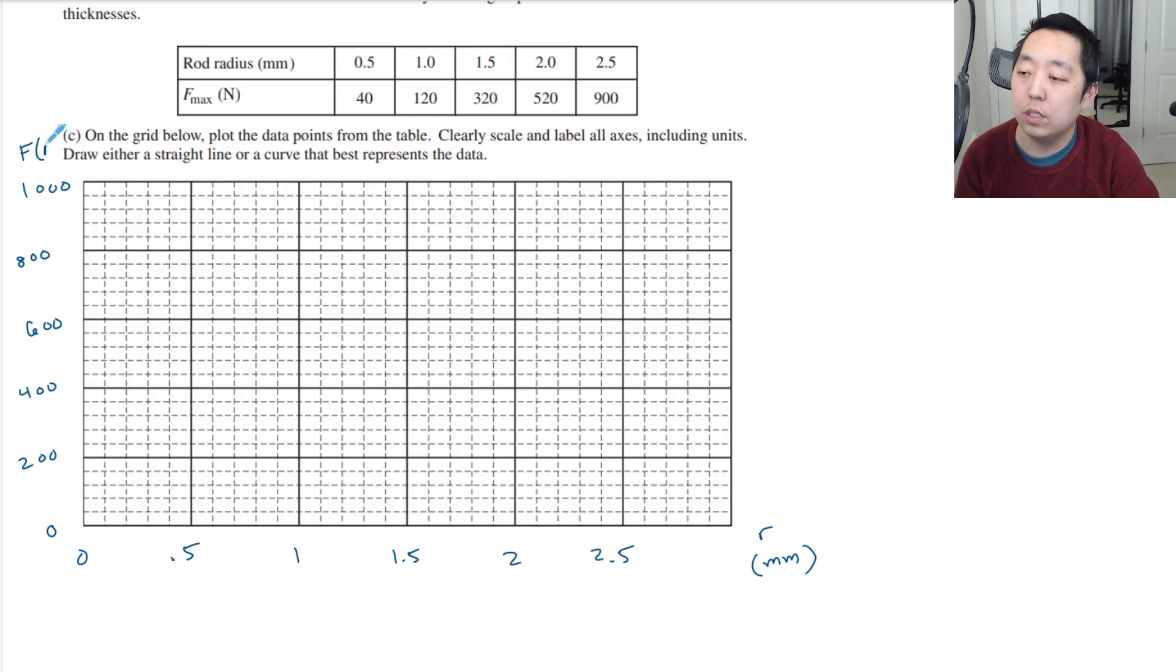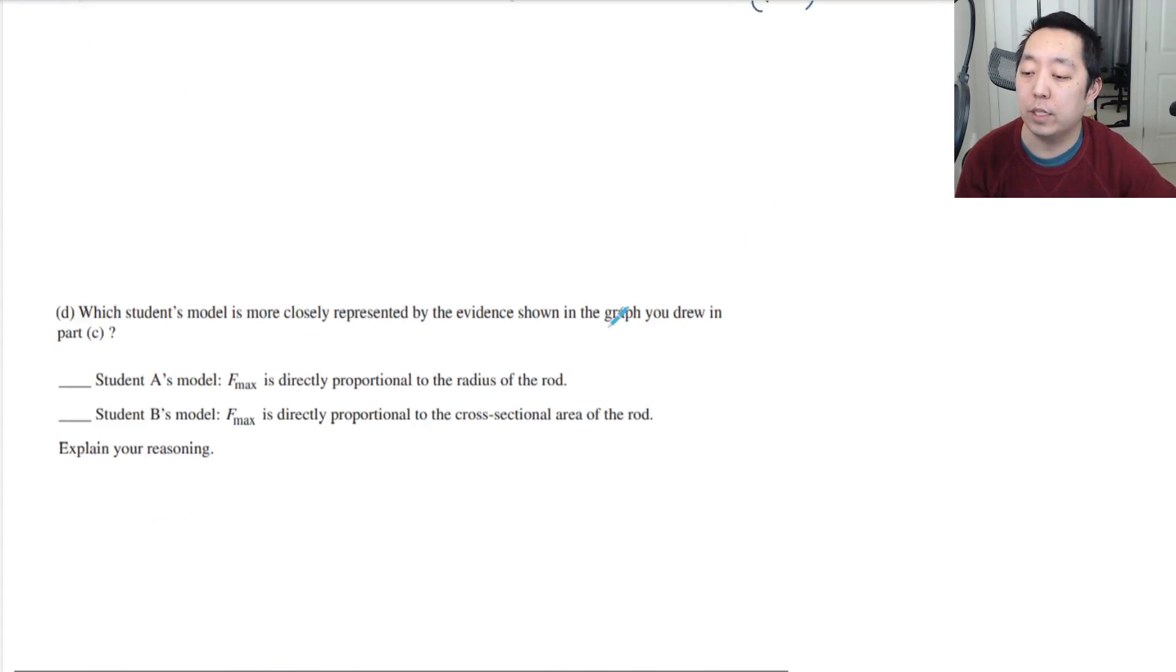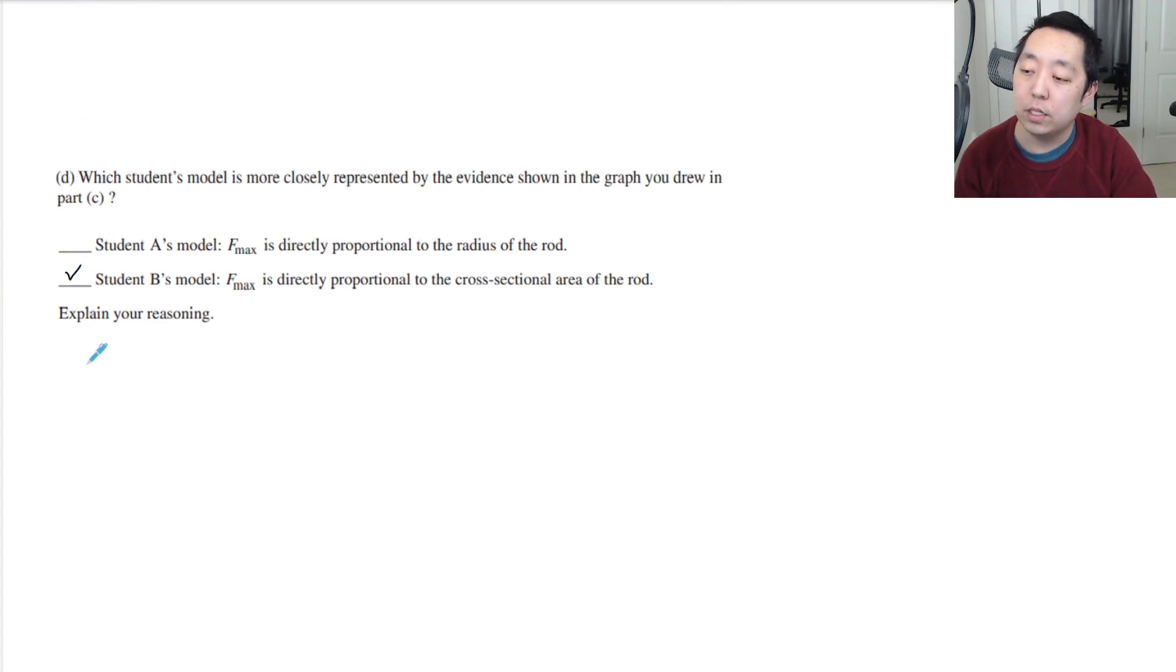This is force in newtons. So then what would I say? Our points are: 0.5, it's 40, well, halfway, so each of these, one, two, three, four, five, they give you five, so each of these are 40. So 40 is there. When 1, it's 120: 40, 80, 120. 1.5, it's 320: that's 200, 240, 280, 320. And then at 2, it's 520: 440, 480, 520. And then at 2.5, it's 900. 900 is halfway between here and here, so it's going to be that point here. So definitely does not look linear, definitely looks like a quadratic. Oh, I cannot freehand this. All right, looks quadratic to me.